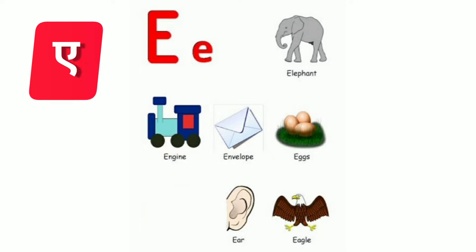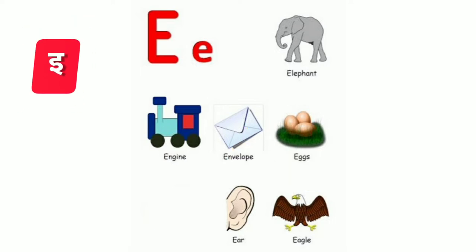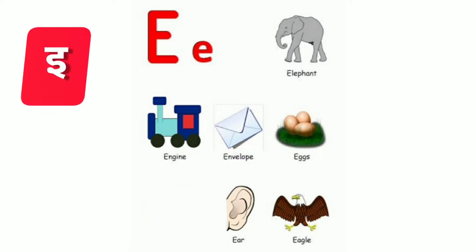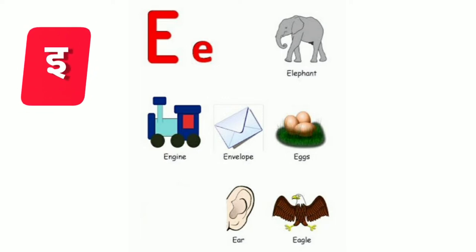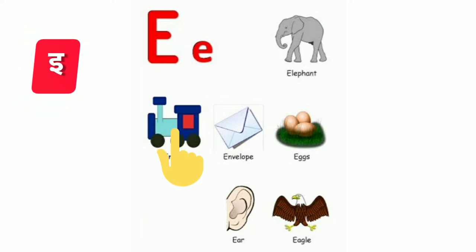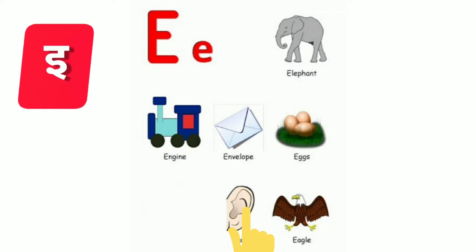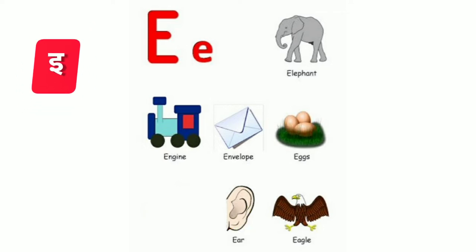E sound is E. Elephant. Eggs. Envelope. E has another sound also — it's E. Engine. Ears.